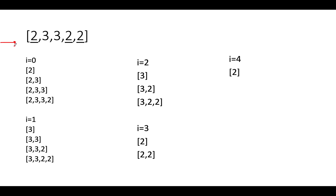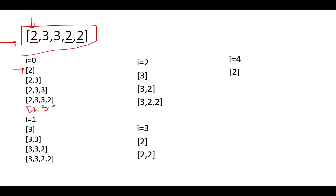Here is the array given to us. In the first step we need to identify all the subarrays that exist with respect to this complete array. Let's write the algorithm to generate all subarrays. Starting from 2: the first one would be [2], the second [2,3], the third [2,3,3], the fourth [2,3,3,2], and the fifth [2,3,3,2,2].